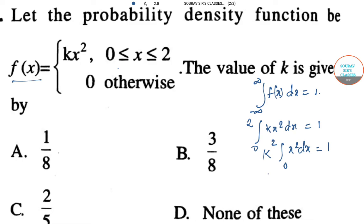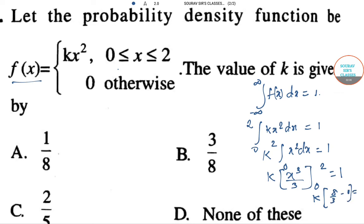So k times the integration of x square dx is x to the power 3 by 3, integrating from 0 to 2, equals 1. So k into 8 by 3, because 2 cube means 8 by 3 minus 0, which equals 1.